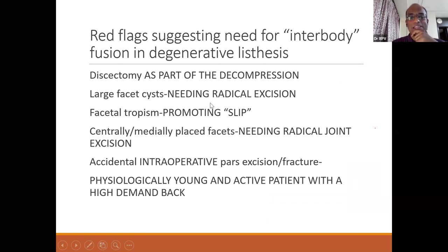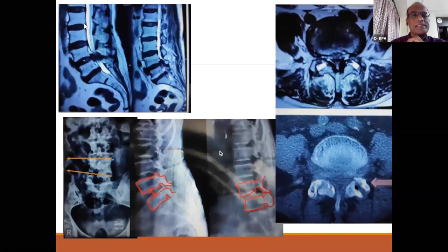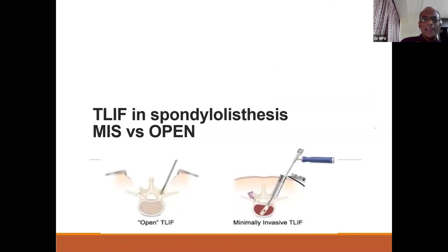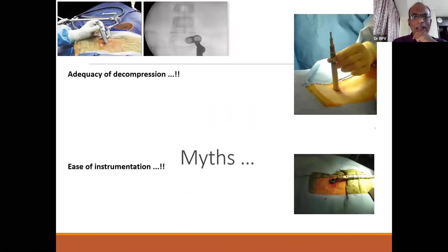The endpoint of lumbar canal stenosis surgery is root mobility — you cannot do only central canal release without root release, as that is a half-done job. Most failed laminectomies for lumbar canal stenosis are due to inadequate root exposure. Always keep the dura wet with saline. Indications for interbody fusion include large discectomy, large facets, facetal tropism requiring joint excision, pars involvement, and high-demand young active patients. For MIS approaches — the question is always whether decompression achieved through a small incision is adequate, which is the challenge for surgeons transitioning from open to MIS technique.